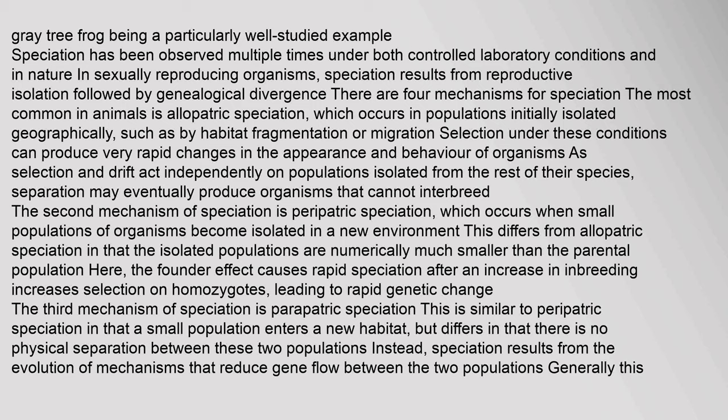In sexually reproducing organisms, speciation results from reproductive isolation followed by genealogical divergence. There are four mechanisms for speciation. The most common in animals is allopatric speciation, which occurs in populations initially isolated geographically, such as by habitat fragmentation or migration. Under these conditions, selection and drift act independently on populations isolated from the rest of their species, and separation may eventually produce organisms that cannot interbreed. The second mechanism is peripatric speciation, which occurs when small populations of organisms become isolated in a new environment — differing from allopatric speciation in that the isolated populations are numerically much smaller than the parental population, and the founder effect causes rapid speciation.